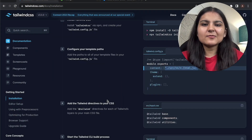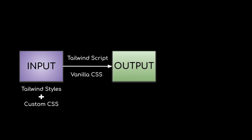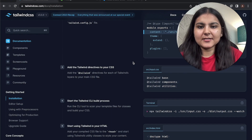Before proceeding, let me explain how Tailwind CSS works under the hood. First, we create an input file where we import all the Tailwind styles, and we can also write our custom CSS there. Tailwind then processes this input file using a Tailwind script, converts the Tailwind styles into vanilla CSS, and stores the result in an output file. That output file is used in our index.html. Whenever we make changes to the input file or use any Tailwind utility classes, we have to run this Tailwind script. So as the next step, we'll create that input.css file.